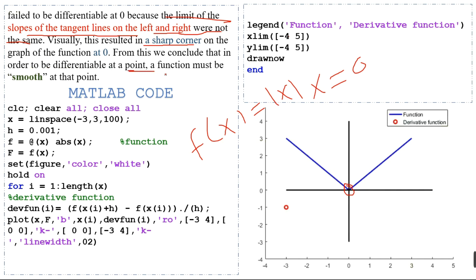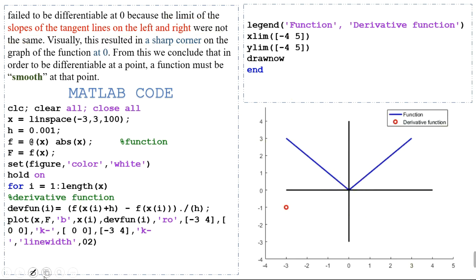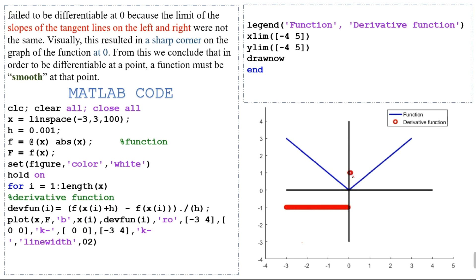We conclude that in order to be differentiable at a point, a function must be smooth at that point — there should not be any sharp corner. From the graph, we can see that at x = 0 the function is not differentiable. When x < 0 or x > 0 the derivative exists, but at x = 0 the derivative is undefined. A MATLAB code is also provided to plot this function.